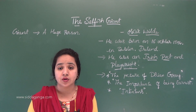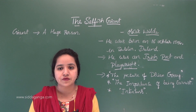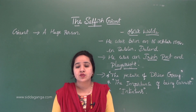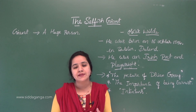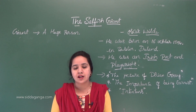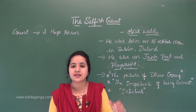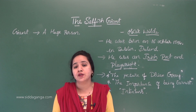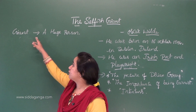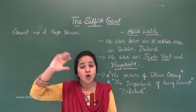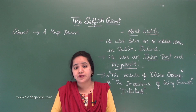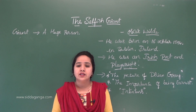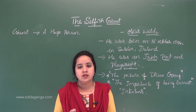What is this lesson, The Selfish Giant? What does 'selfish' mean? Selfish means a person who has excessive desires and thinks only about himself or herself. And what is a 'Giant'? Giant means a huge person — a tall person, a gigantic figure.